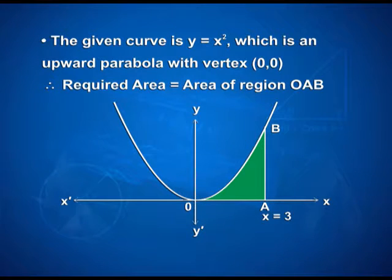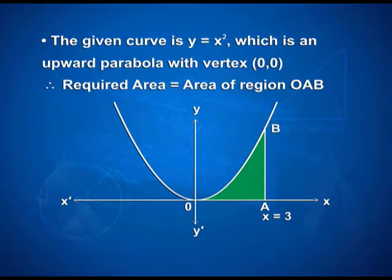Now look at the solution to the second question. The given curve is y is equal to x squared, which is an upward parabola with the vertex at the origin (0, 0). Therefore, the required area is equal to the area of the region O, A, B. Here x is equal to 3.